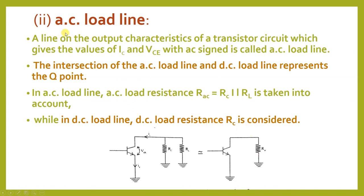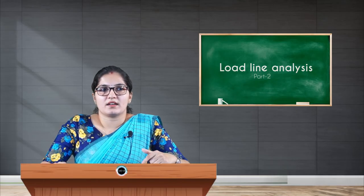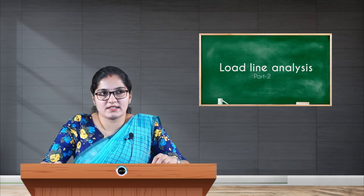Next is the AC load line. The AC load line is a line on the output characteristic of a transistor circuit which gives the values of IC and VCE with an AC signal applied. While drawing the DC load line we do not consider AC values — that is, under no-signal conditions. For the AC load line, we must consider the AC signal values.